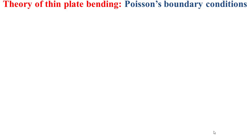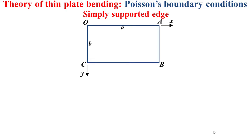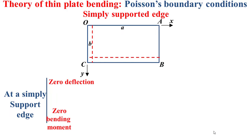Now I'll discuss the second Poisson's boundary condition: the simply supported edge. Based on the same model, I consider that the edge OC defined by x equal to zero is simply supported, and the edge CB defined by y equal to b is also simply supported. At a simply supported edge, we have zero deflection and zero bending moment — that is the fundamental idea of a simply supported edge.